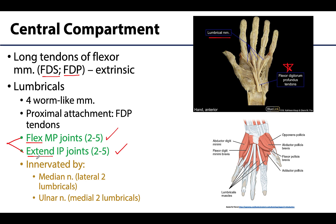The lumbricals are uniquely innervated: the medial two lumbricals are innervated by ulnar nerve branches, as expected for most intrinsic hand muscles. However, the lateral two lumbricals are innervated by the median nerve — they are a little closer to the thenar region, which makes sense.